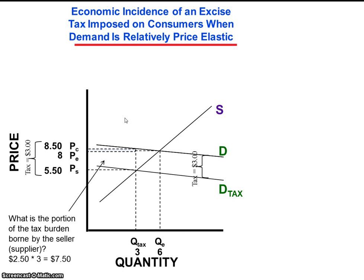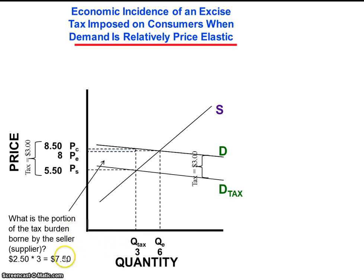The portion of the economic burden borne by sellers is larger, indicated by the equilibrium price of $8 minus the price realized by sellers, $5.50, or $2.50, times the quantity in the tax market of $3, equals $7.50. So of the $9 total taxes, sellers are clearly bearing a much larger portion of the tax.